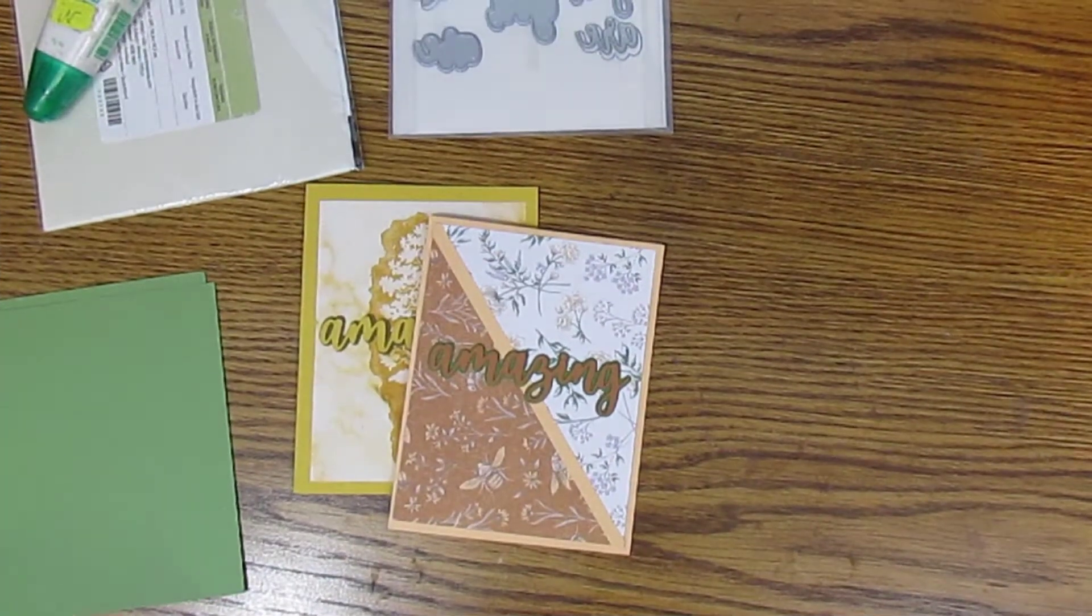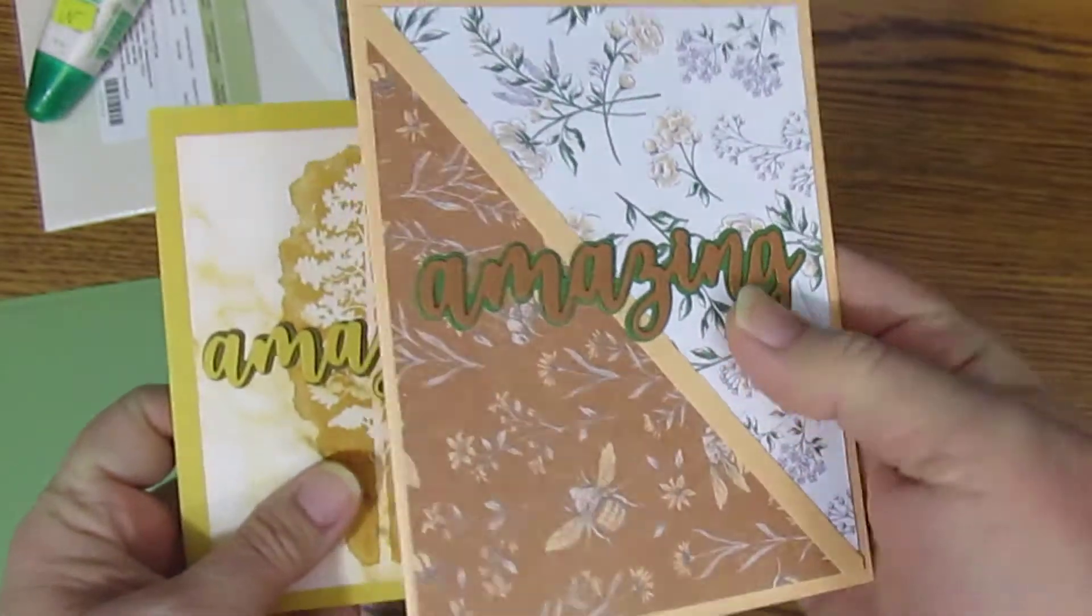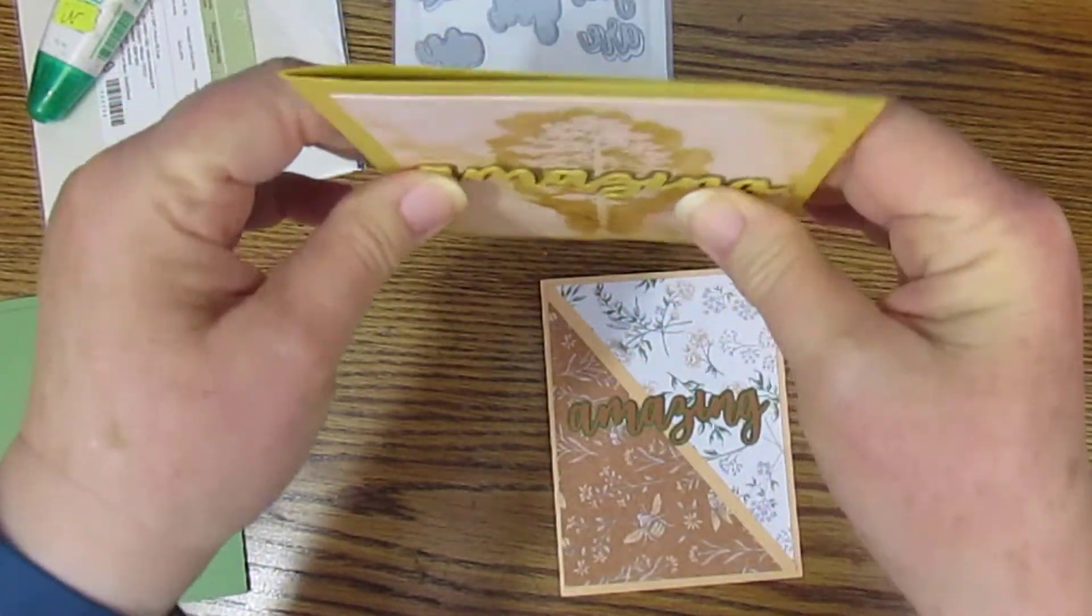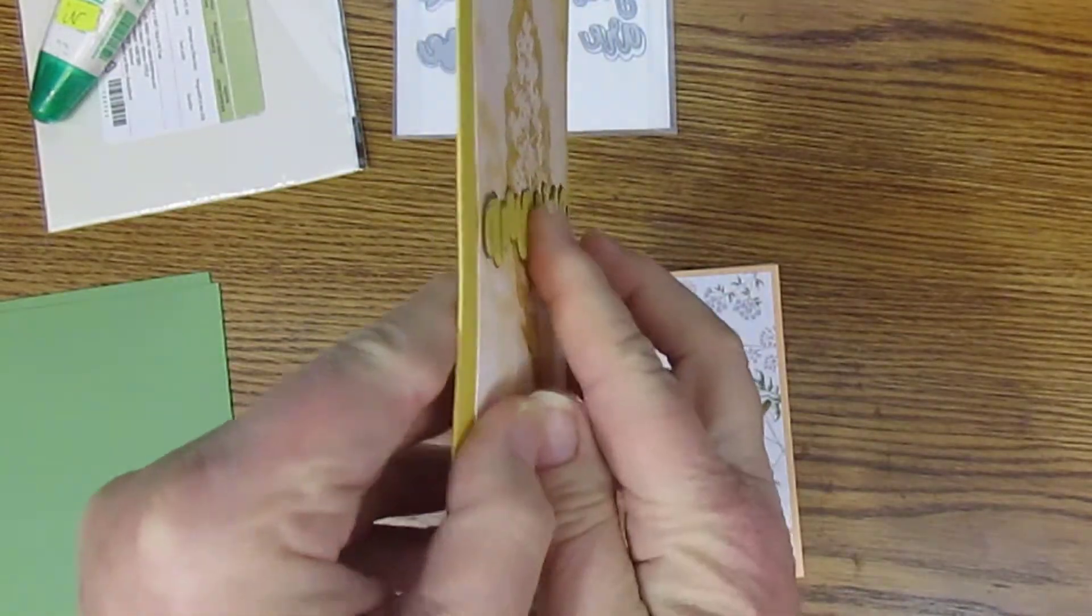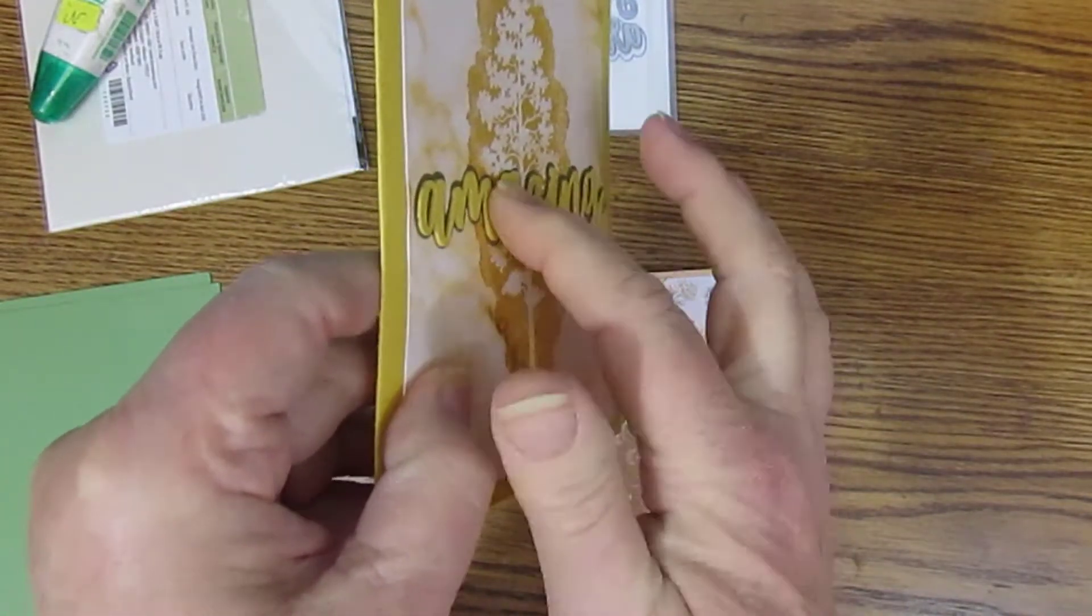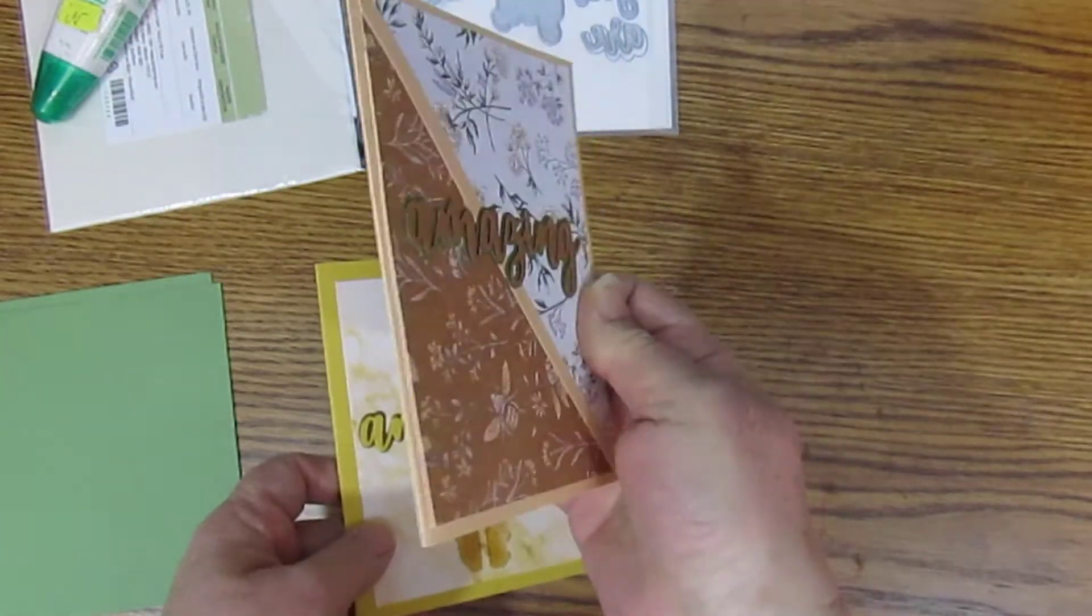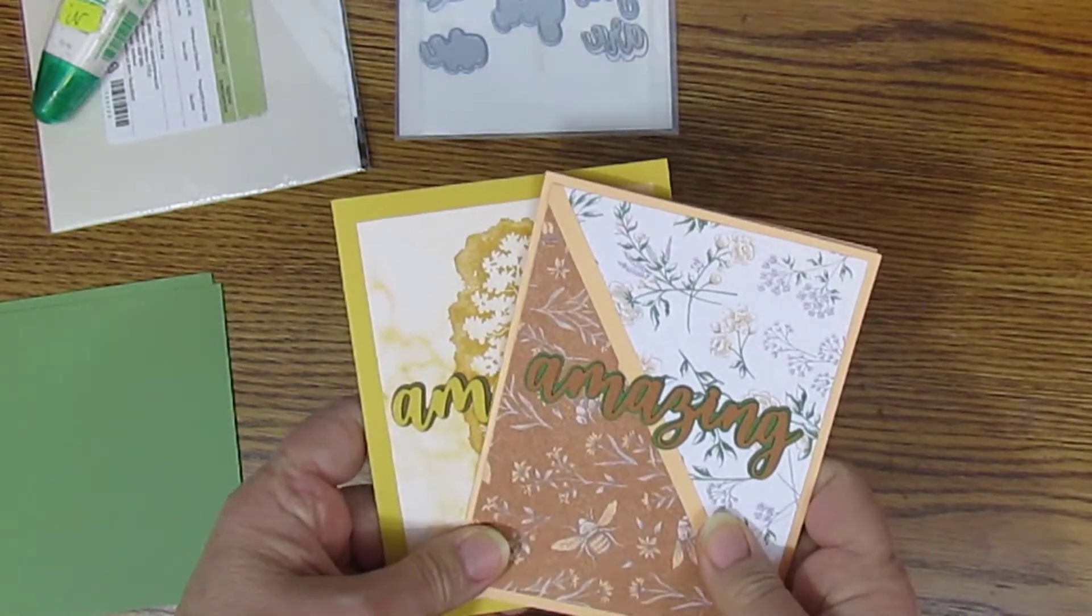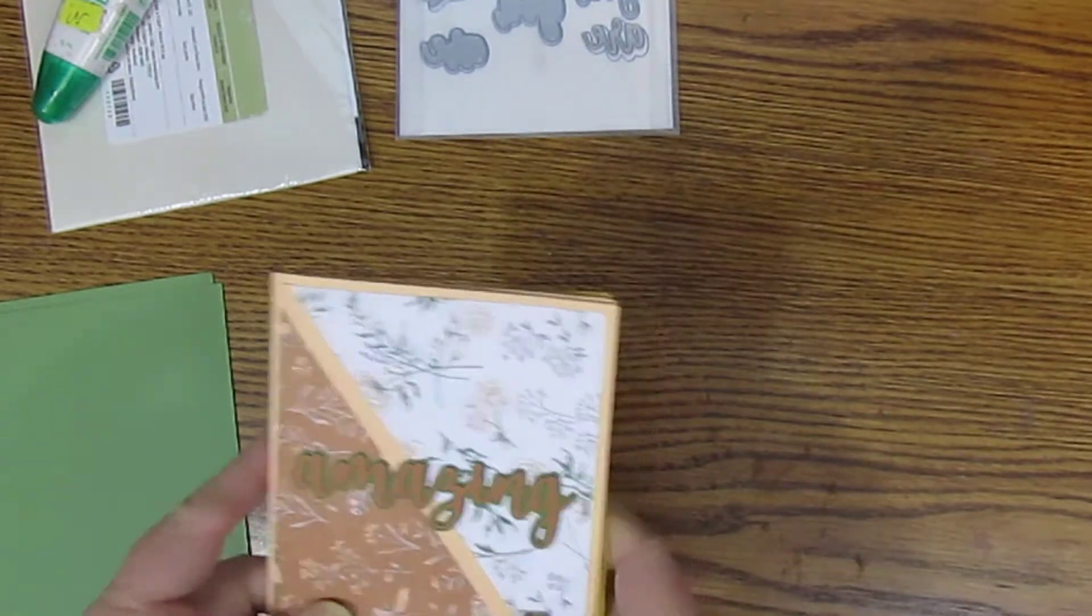Hello! Welcome to Nindy's Creative Corner. Today we are going to learn how to do these layered word dies. If you'll notice, I put double thick on the top word. You can do however many layers you want. It's pretty easy. There are two ways you can do this and I will show you both.